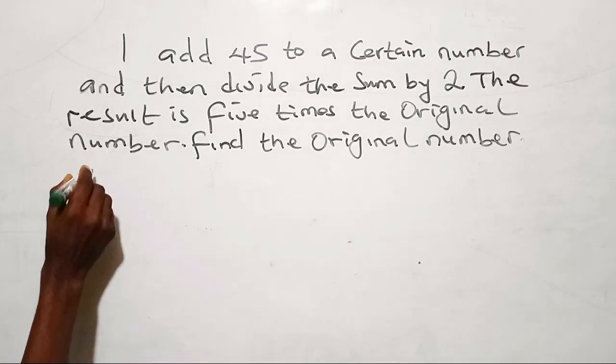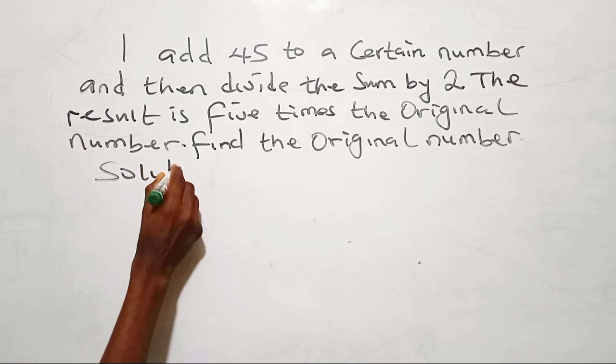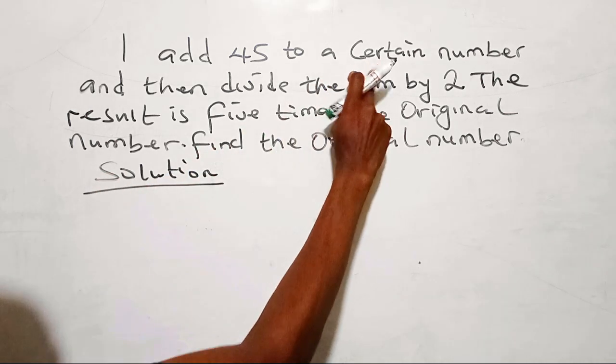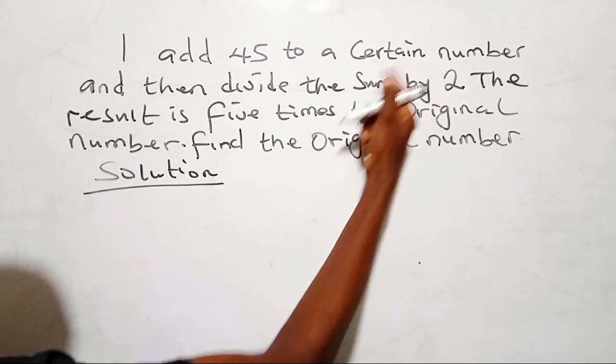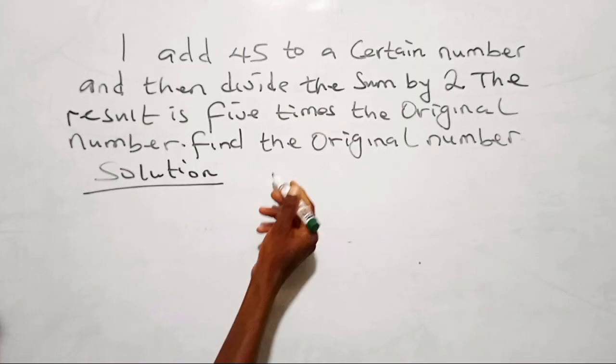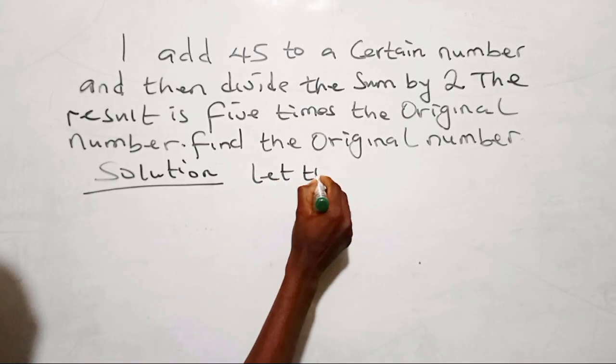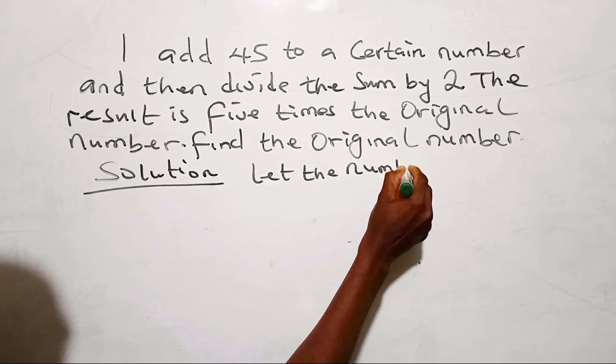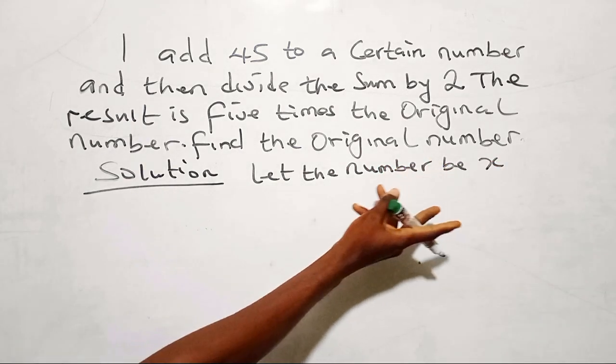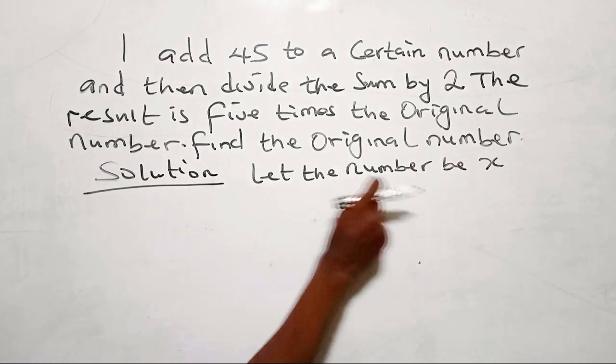So I'll do this solution. We are working with a certain number. So a certain number is an abstraction. So let us assume the certain number is x. So let us let the number be x. We can make it any letter, but let's use x in this case.